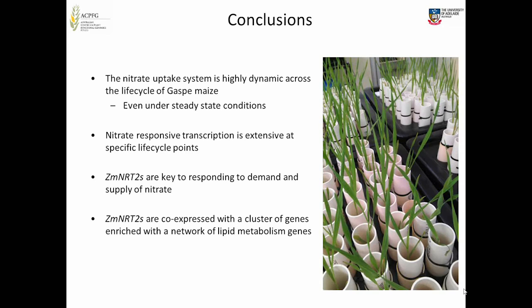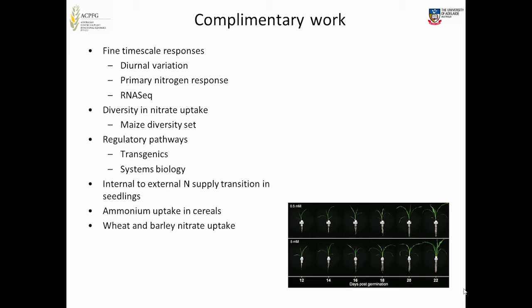We've done a lot of other work — some fine timescale analysis going down to diurnal variation, which we're writing up now. That's where the model gets more complicated. We've also looked at the primary nitrate response — another experiment Luke did. Much of the nitrogen literature is based on starving a plant and then resupplying it with nitrate, so we did that to put our work in context. We've also done diversity set work with 120 maize lines, settling on 30, and found again that NRT2s were important in maintaining nitrogen supply when nitrogen was short.